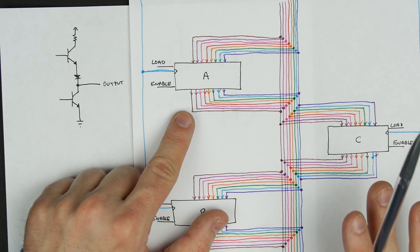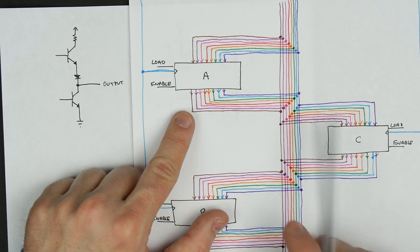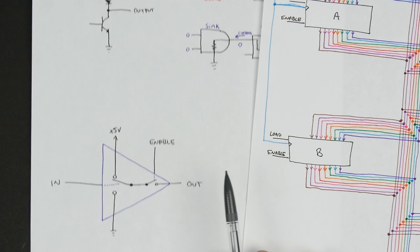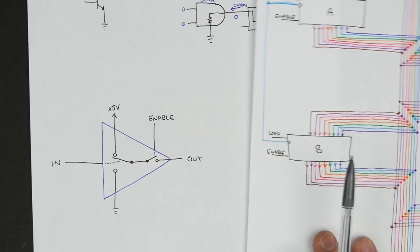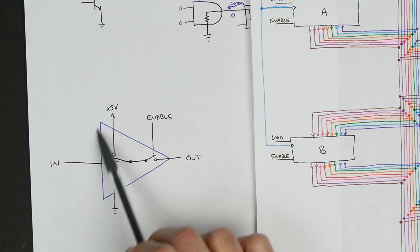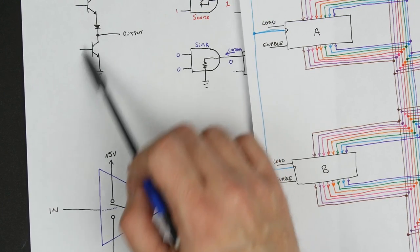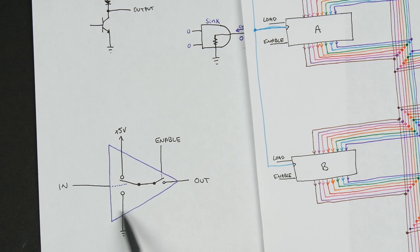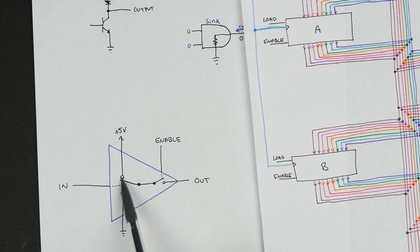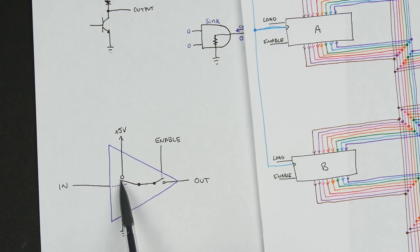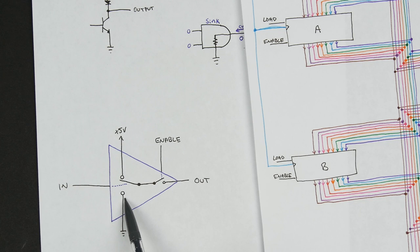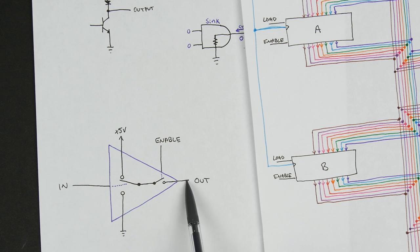If you didn't understand anything about sourcing or sinking current, that's okay. A simpler way to think of this: you can think of a gate where you have an input coming in and this is just a simple buffer — whatever the input is, the output is going to be. The input is just controlling a switch. If the input is a 1, the switch is up and you get 5 volts out. If the input is a 0, the switch is down and your output is connected to ground, so you can sink current or the output is at 0 volts.